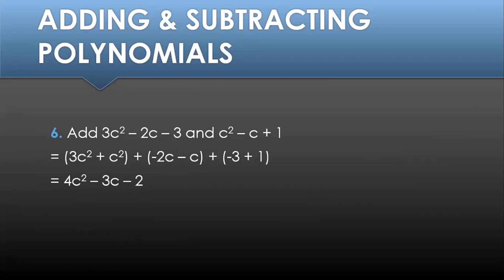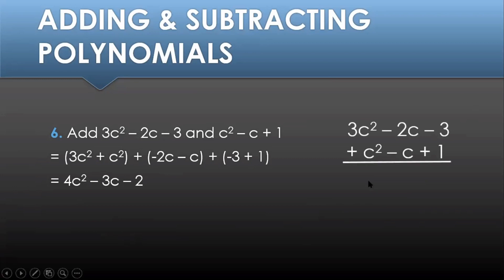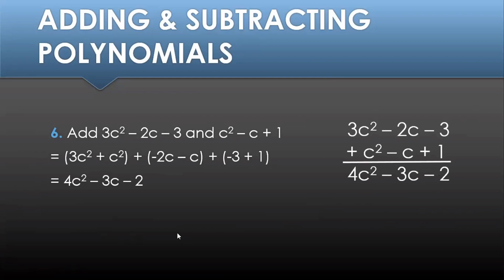Another way of adding or subtracting polynomials is by arranging the addends vertically with similar terms on the same column. Aligning the similar terms, we proceed with addition: 3c squared plus c squared gives 4c squared; negative 2c minus c gives negative 3c; and negative 3 plus 1 gives negative 2. Either way, you get the same answer.